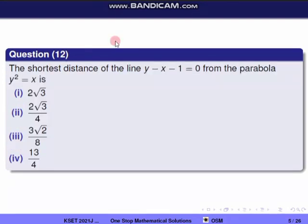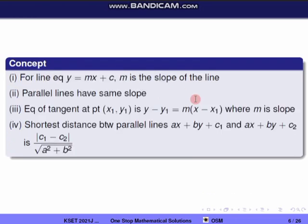Next question, question 12. The shortest distance of the line y minus x minus 1 equal to 0 from the parabola y² equal to x. The distance between the parabola and the line — we can use the first concept.